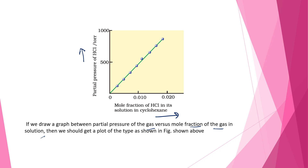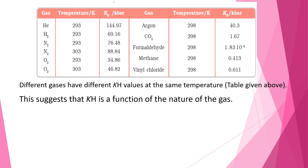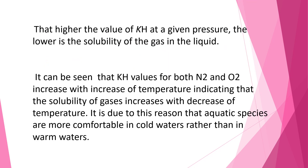Let's draw some inferences from the table. Different gases are listed — helium, hydrogen, nitrogen, and oxygen — with temperature measured in Kelvin. Values are given at 293 K and 303 K for nitrogen and oxygen. Different values of Henry's constant KH are measured for different gases at different temperatures, showing that KH is a function of the nature of the gas. The higher the value of KH at a given pressure, the lower is the solubility of the gas in the liquid.